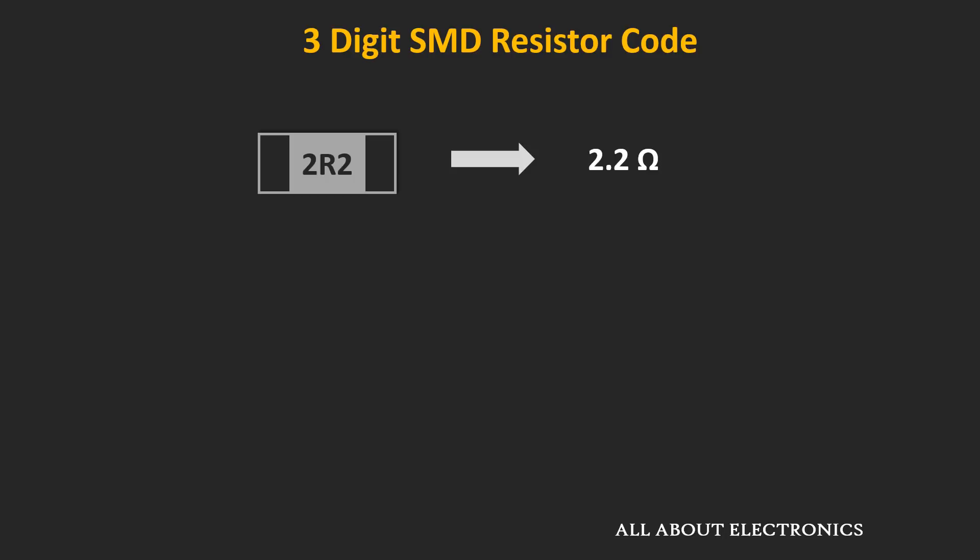Sometimes in the three-digit coding scheme, the letter R is used to define the position of the decimal point. For example, if the code is 2R2, the value of the resistor is 2.2 Ω. And for the code R39, the value would be 0.39 Ω. So the letter R indicates the position of the decimal point, and in this way we can find the resistor value using the three-digit code.